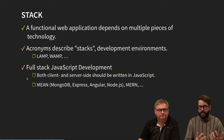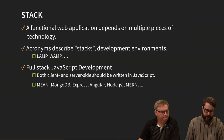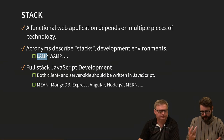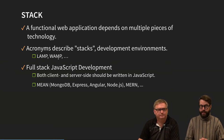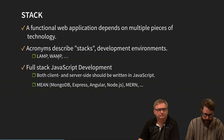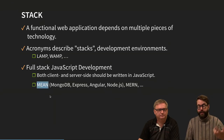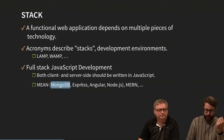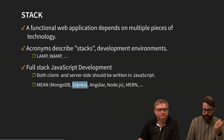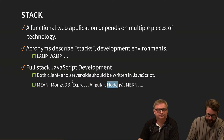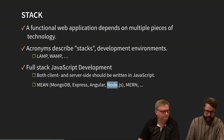There are many stack acronyms: LAMP (Linux, Apache, MySQL, PHP), WAMP (Windows, Apache, MySQL, PHP). These even tell you which database is in the background. In JavaScript, MEAN is a common one: MongoDB, Express, Angular, and Node.js. MERN replaces Angular with React. In this course we will use Mongo, Express, and Node.js — so it's a MEN stack. We'll probably use vanilla JavaScript on the client side, making it MEVN.